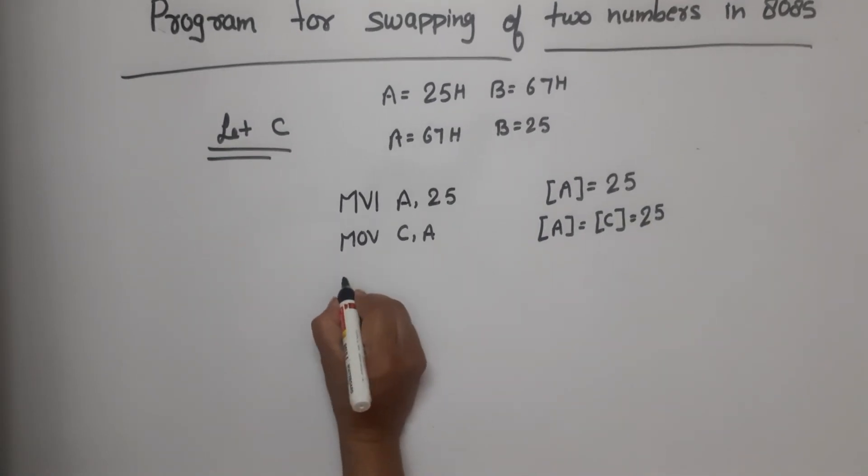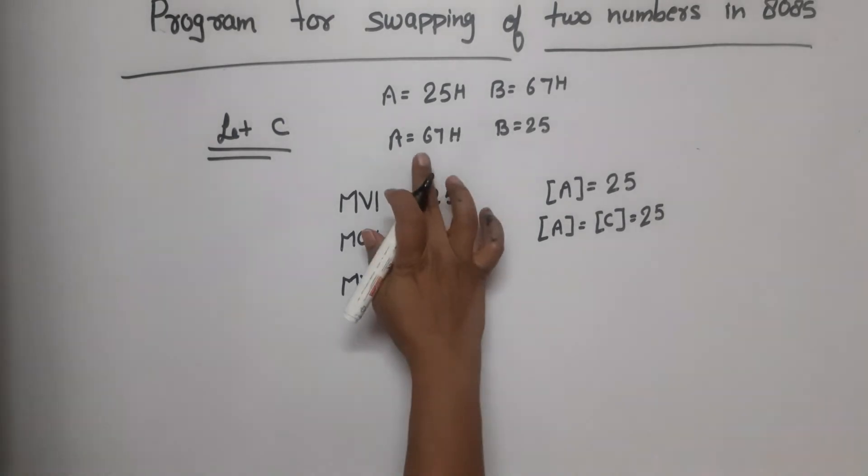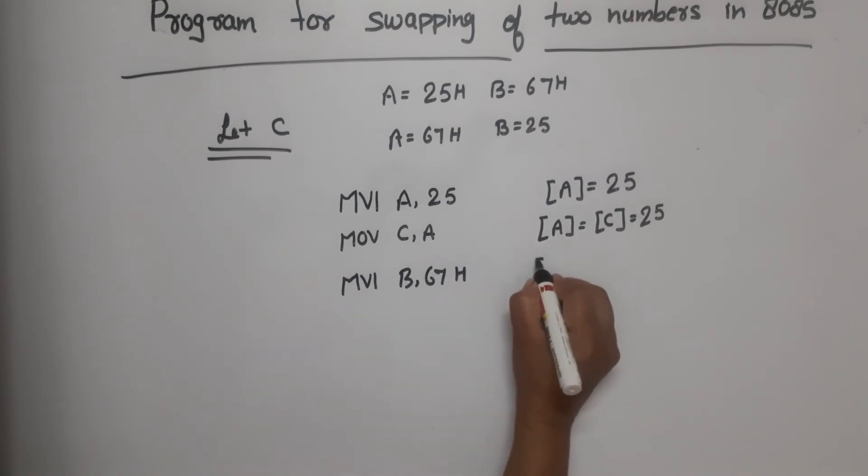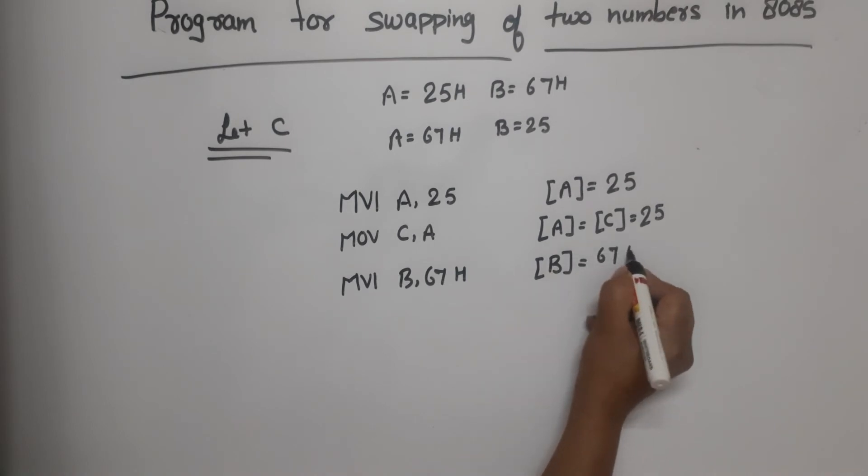Now what will we do? MVI B,67H, second number. After execution of this line, register B's value will be 67H.